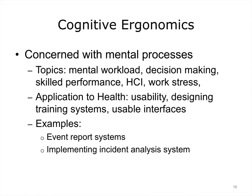Recall that cognition, as defined by the Merriam-Webster Dictionary, is 'conscious mental activities — the activities of thinking, understanding, learning, and remembering.' So cognitive ergonomics addresses the gamut of cognitive issues, including decision-making, skilled performance, and mental workload, which is an issue we will come back to later in this lecture. It also addresses usability of systems, which is a central issue in this course. This lecture focuses predominantly on cognitive issues.